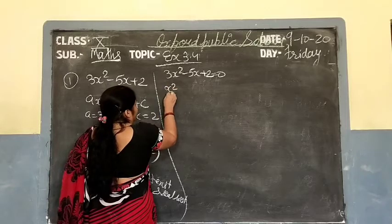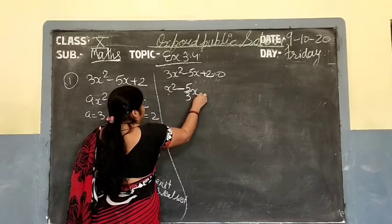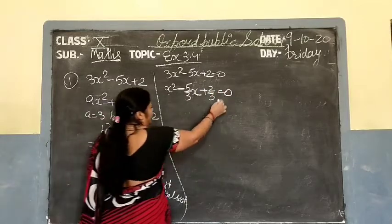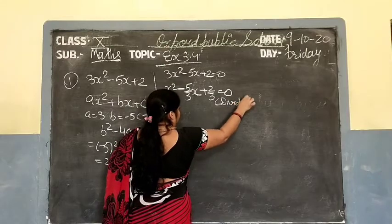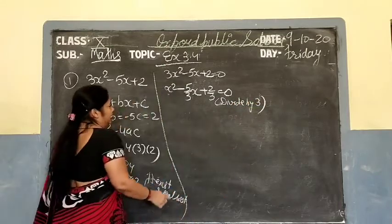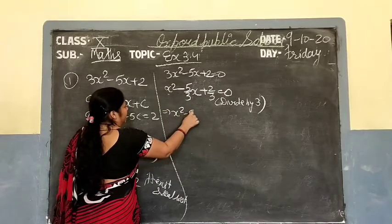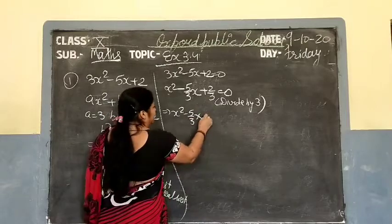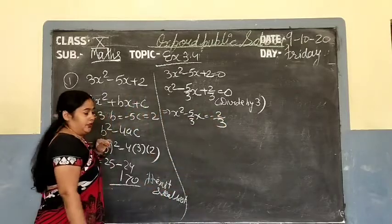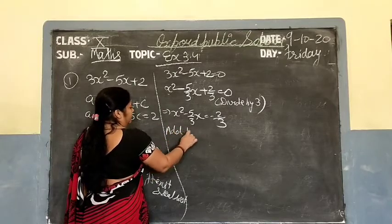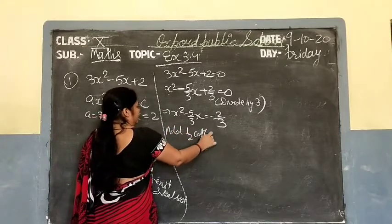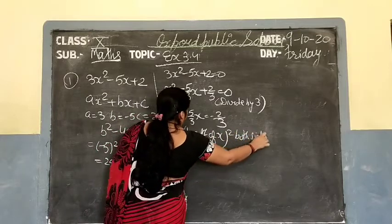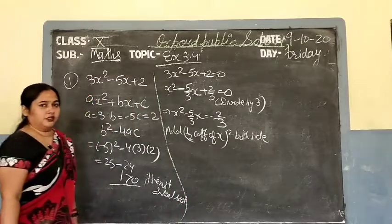So we get x square minus 5 upon 3 times x plus 2 upon 3 equal to 0, divide by 3. Next step: move 2 upon 3 to the right side to get minus 2 upon 3. Then add half the coefficient of x, whole squared, to both sides.